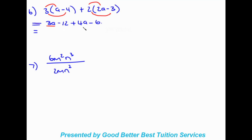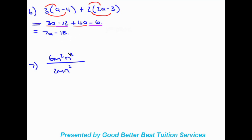Now we need to look at the like terms. We have 3a and 4a, and we have negative 12 and negative 6. Adding the like terms: 3a plus 4a gives 7a. Then negative 12 minus 6 — if the signs are the same we add the numbers and keep the sign — gives negative 18. So our final answer is 7a minus 18.